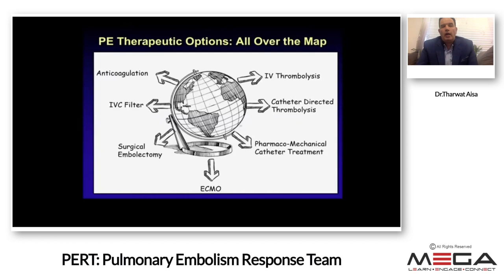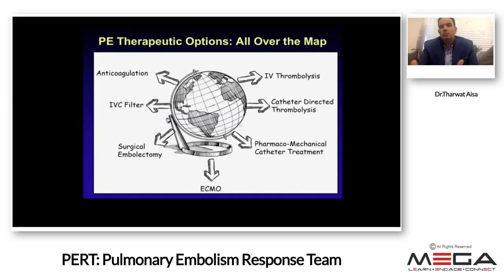Therapeutic options for pulmonary embolism are spread all over the map: IV thrombolysis, catheter-directed therapy, ECMO, surgical embolectomy, IVC filter placement, and anticoagulation. All of these modalities require different specialties to decide which is best for a given patient, and you may need to consult multiple specialties to reach that decision.